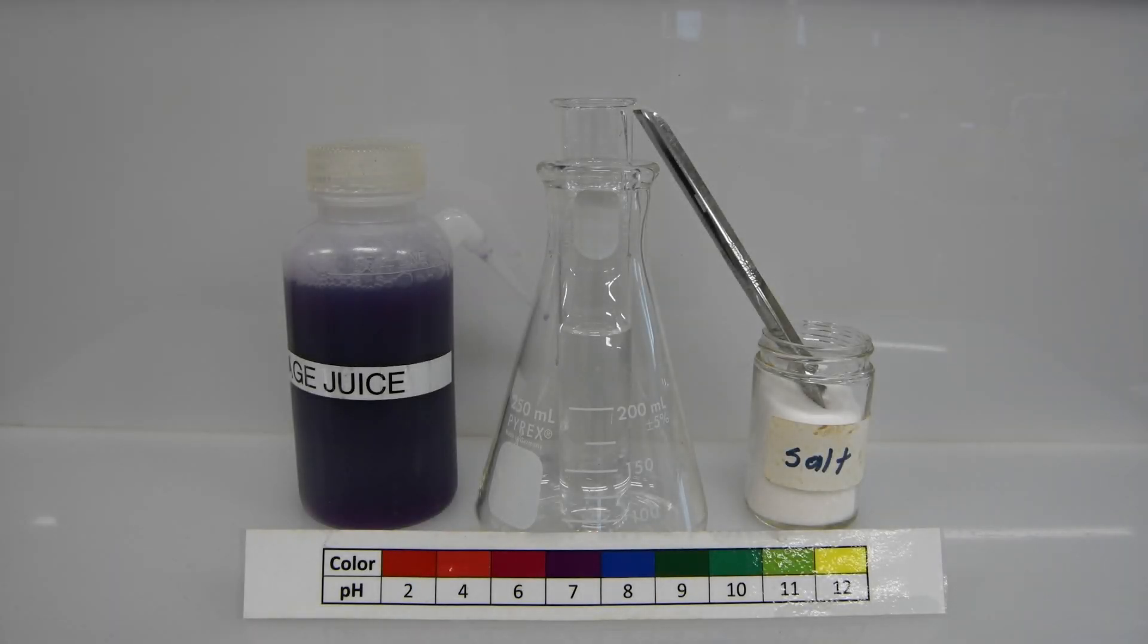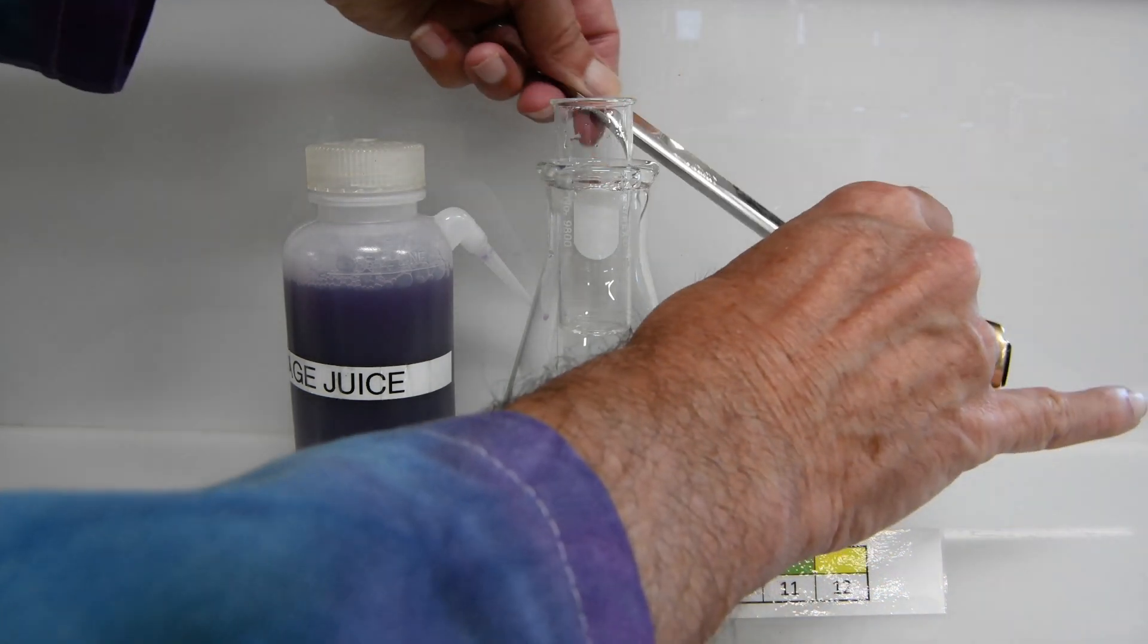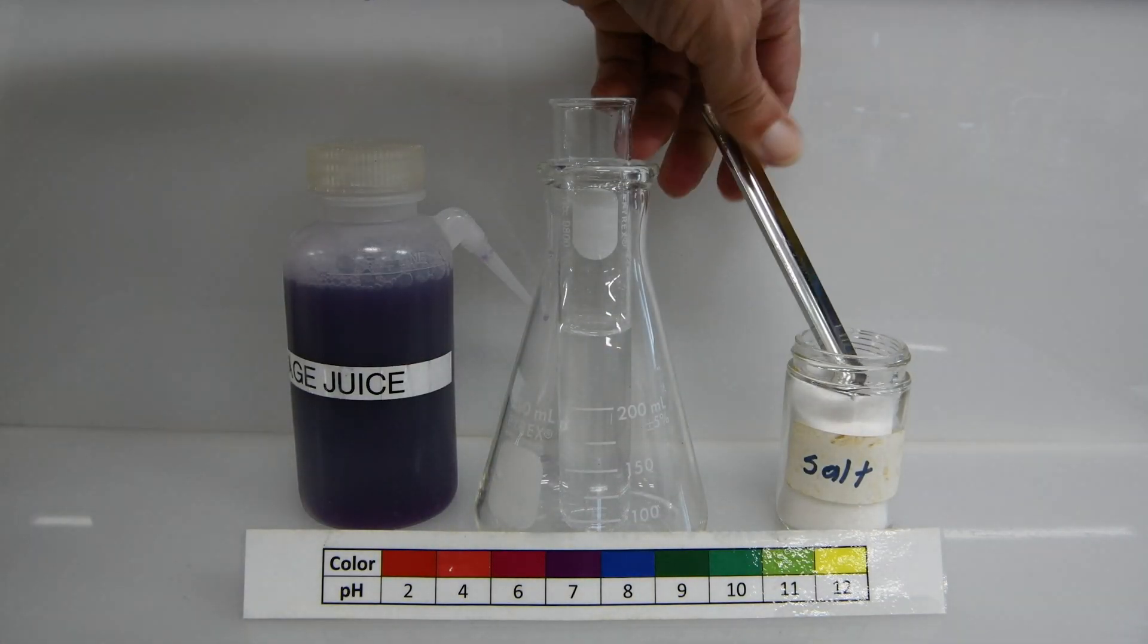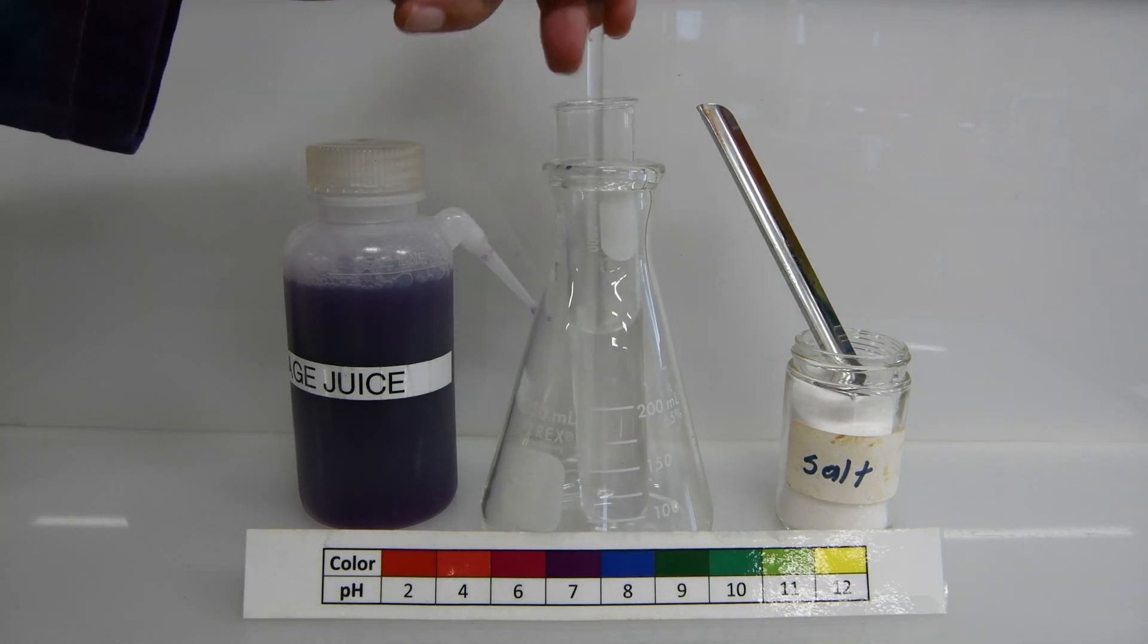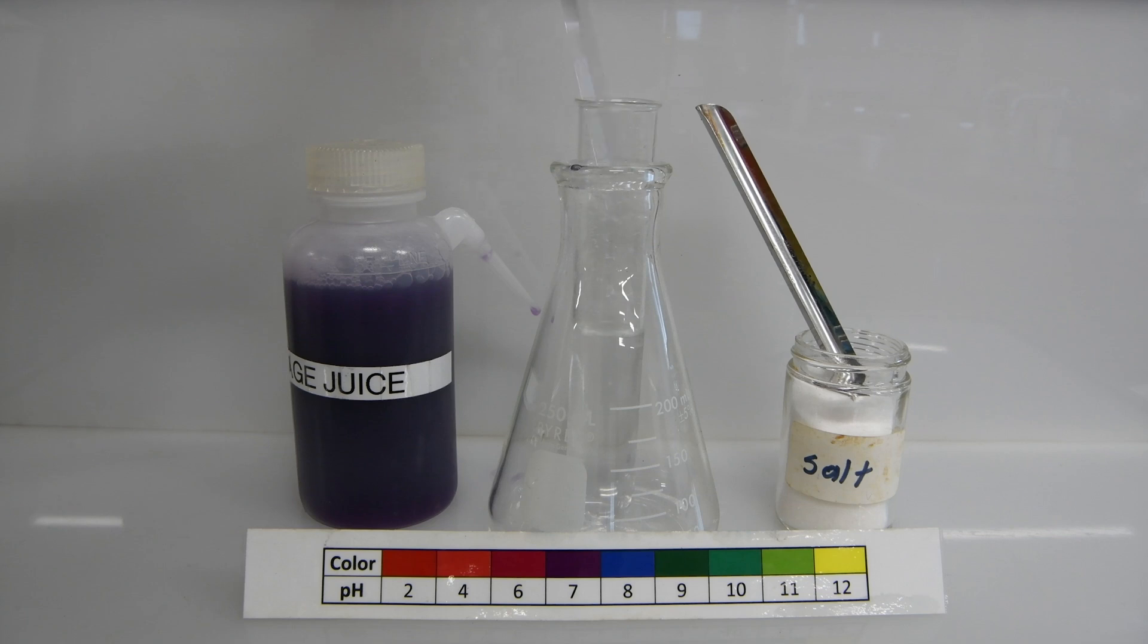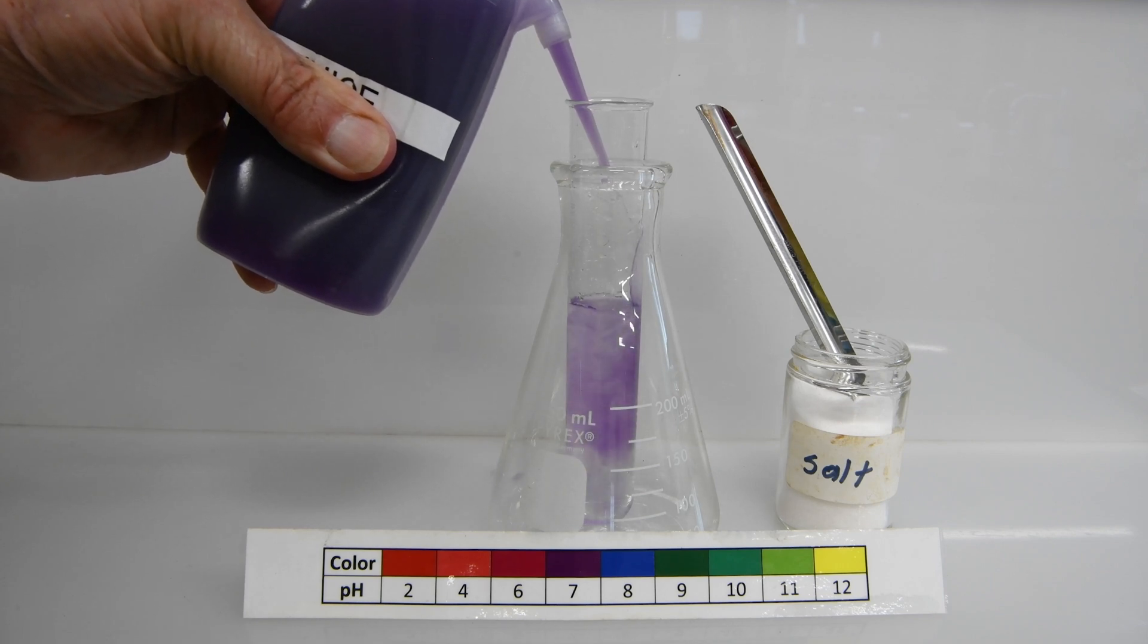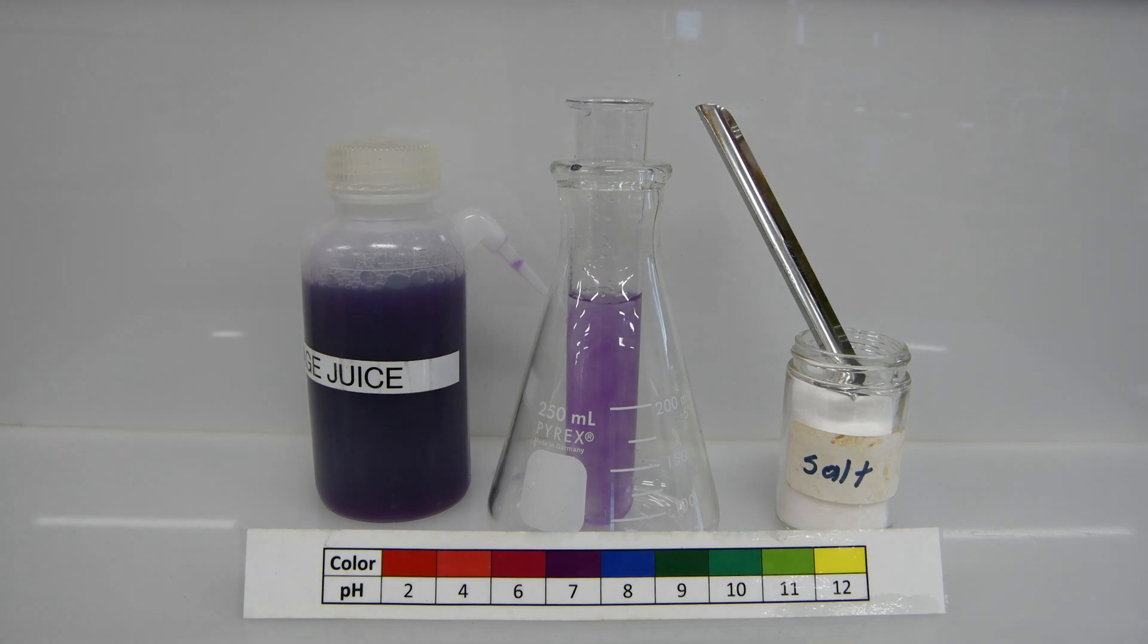Now we're going to test some table salt. So we'll add a little bit of salt to our test tube. Go ahead and stir that around to get it to dissolve. And then add a bit of our cabbage juice. And it appears that much like the sugar, the color has remained unchanged.